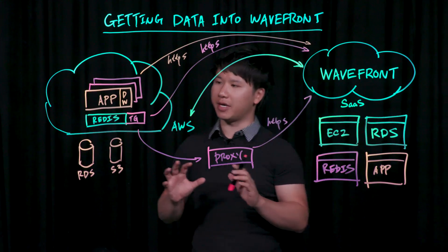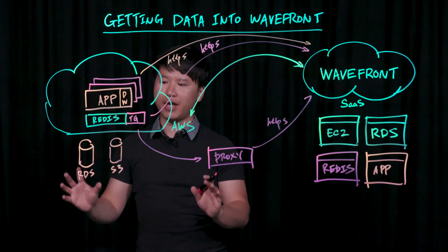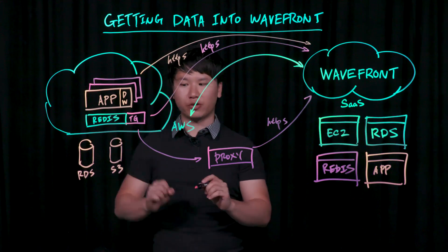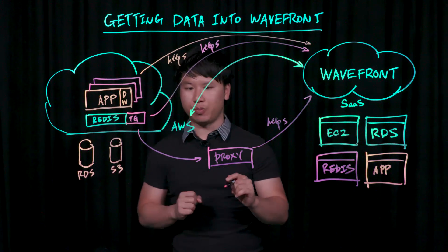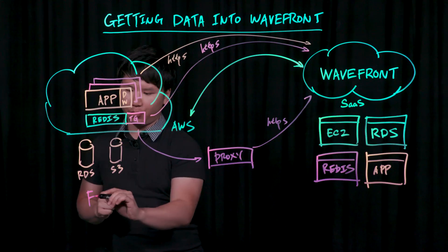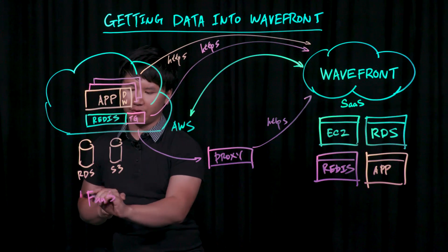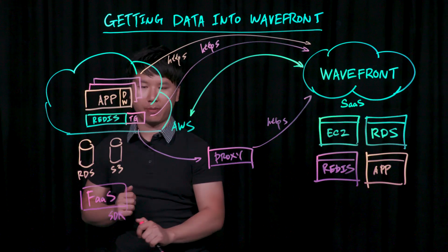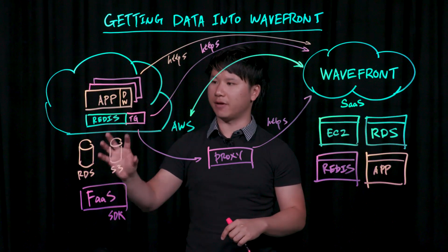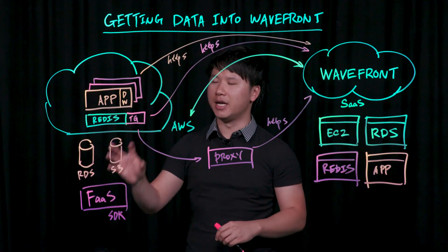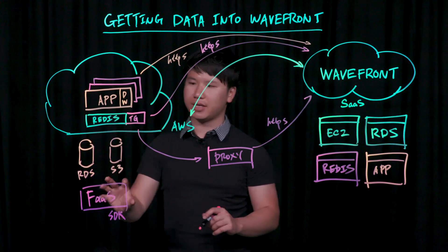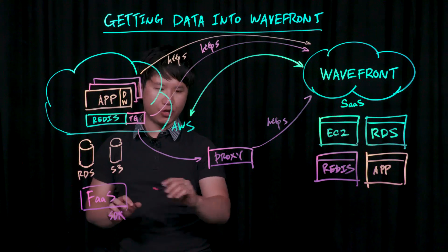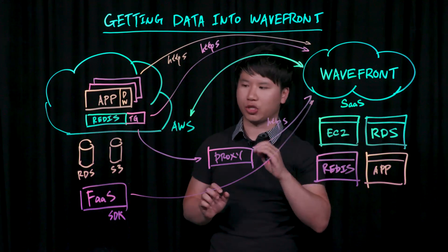I also want to talk about a specific integration we have. Let's say your app is performing well and you decided to try out serverless — on AWS, that would be Lambda. We have a function-as-a-service integration, also shipped as an SDK for popular languages. You can put very simple logic and run it on AWS, having metrics sent directly to Wavefront. For that particular SDK, you can use a proxy or do direct ingestion.